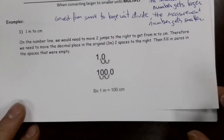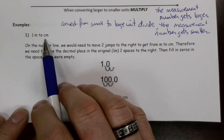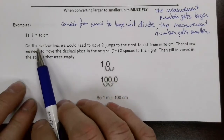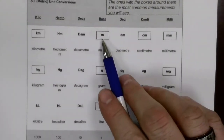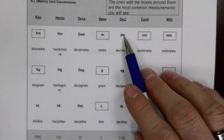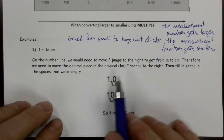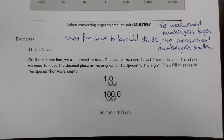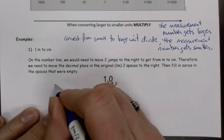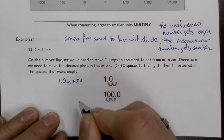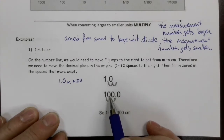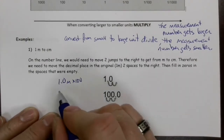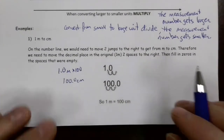Let's convert 1 meter to centimeters. On the number line, we move two jumps to the right — through decimeter to centimeter — so we multiply or divide by 100. Since we're going from a larger unit to a smaller unit, the number must get bigger, so we multiply by 100. Starting with 1.0 meter, multiplying by 100 moves the decimal two places to the right, giving us 100 centimeters. One meter equals 100 centimeters.